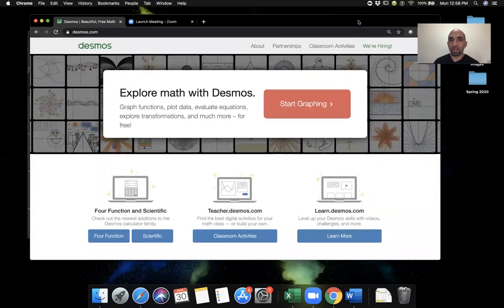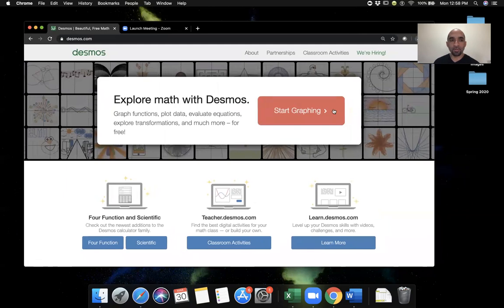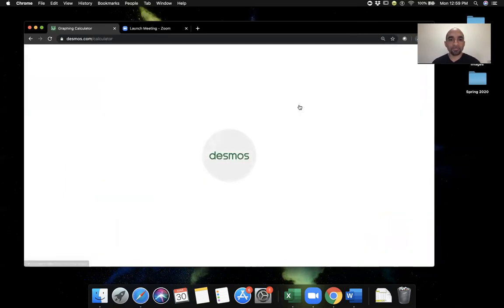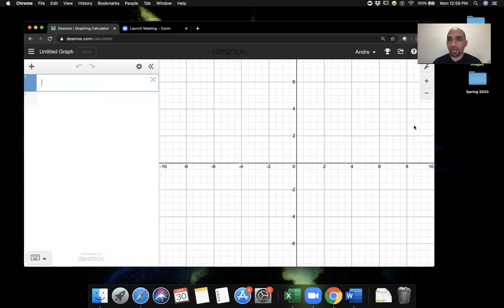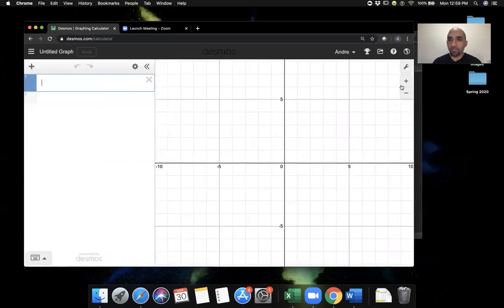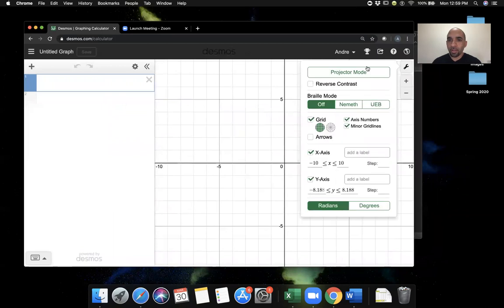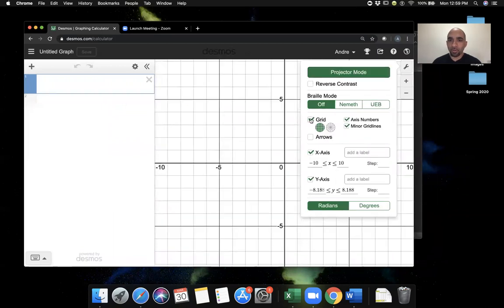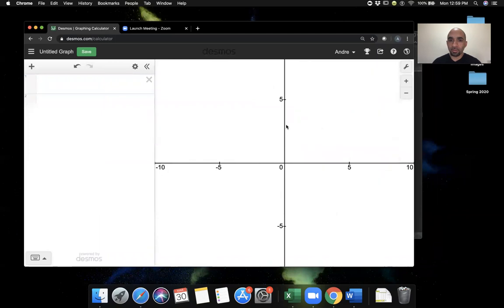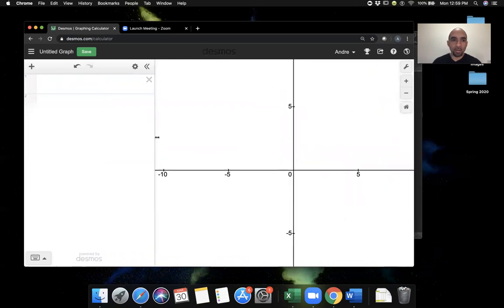Desmos is a website that allows us to do a lot of calculations for statistics. Click start graphing. I'm going to do a couple things to get this set up. First, I'll click on this wrench and go to projector mode. I'm also going to get rid of the grid so this looks a little cleaner, and then I'm going to move this over so you can see exactly what I'm doing.